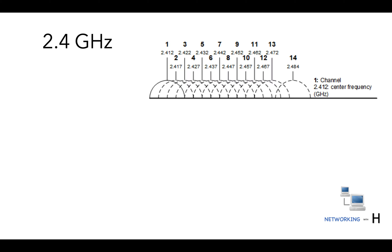For the 2.4 gigahertz band, there are 14 channels in total. Unfortunately, these channels overlap, so they aren't all usable at the same time.